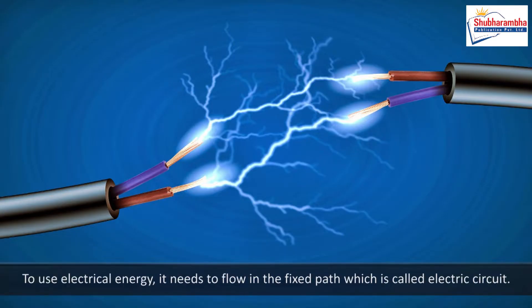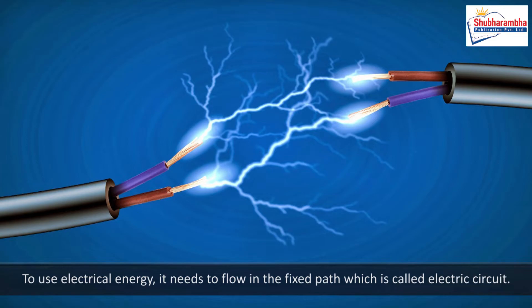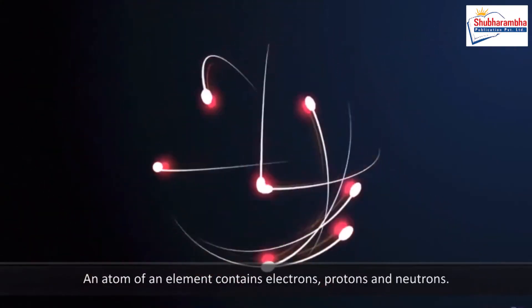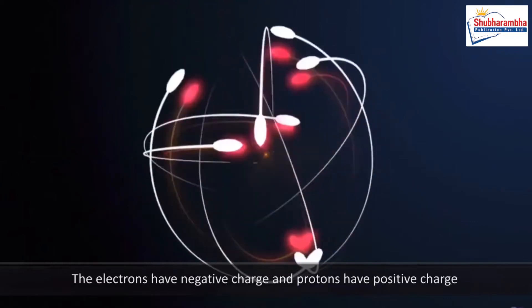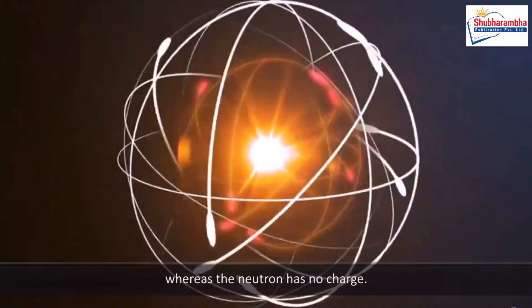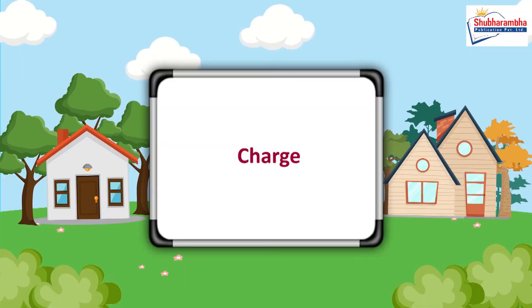Electrification: An atom of an element contains electrons, protons, and neutrons. The electrons have negative charge and protons have positive charge, whereas the neutron has no charge. Since the number of electrons and protons is equal in an atom, the atom is electrically neutral.